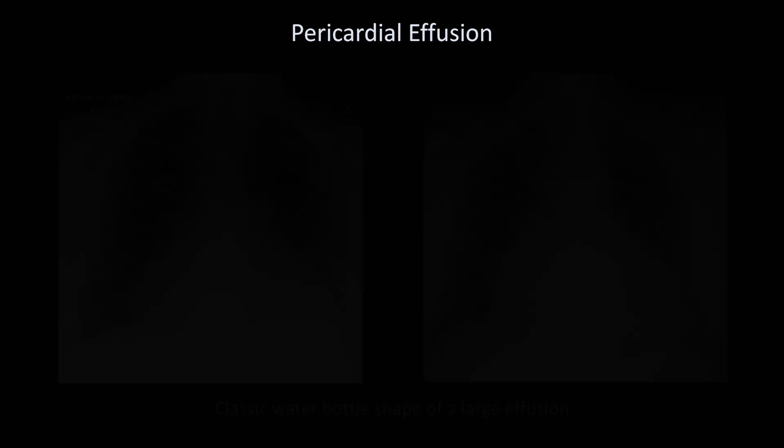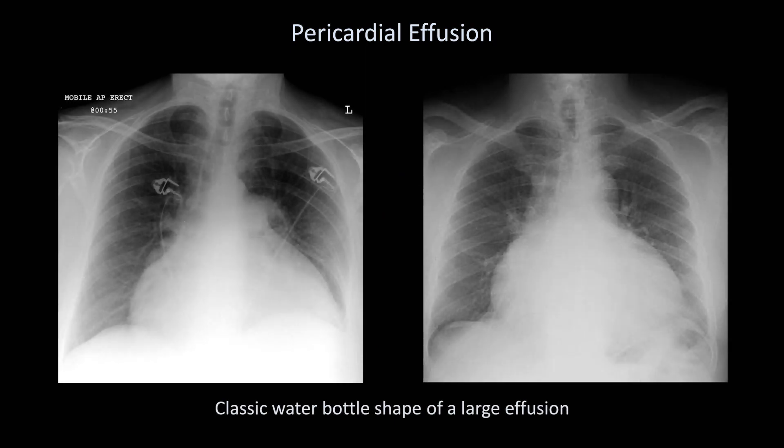Here are two examples of the water bottle shape of a very large pericardial effusion. You may be wondering how these look like water bottles, but the name was given when water bottles weren't made out of aluminum or rigid plastic, but rather soft-sided materials like leather.